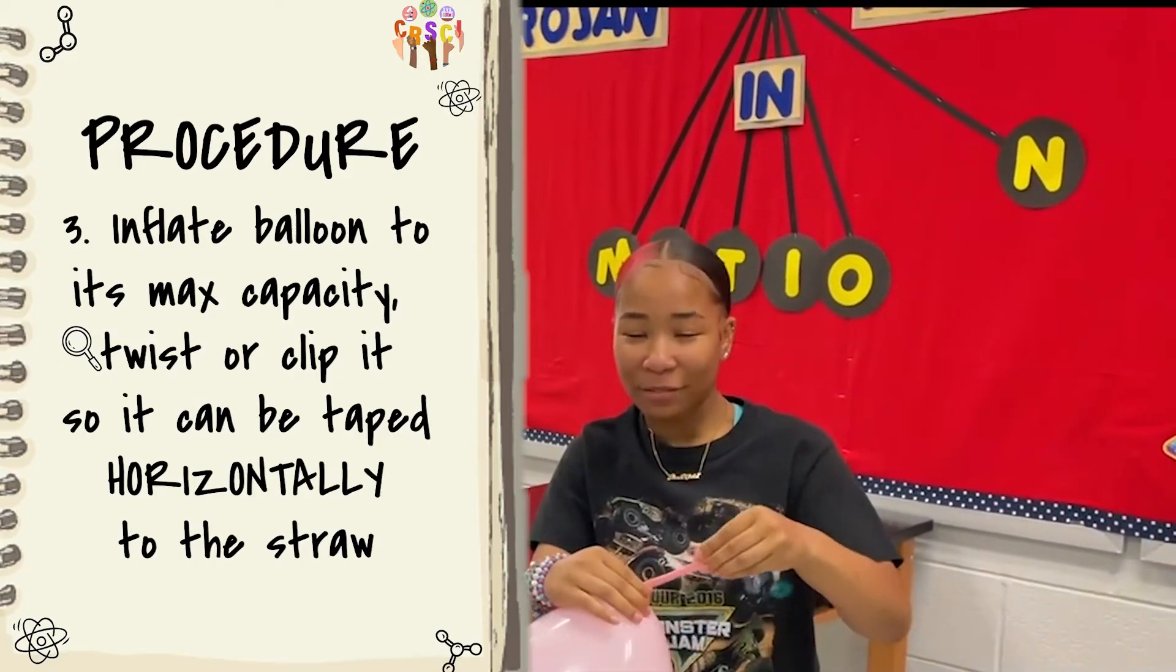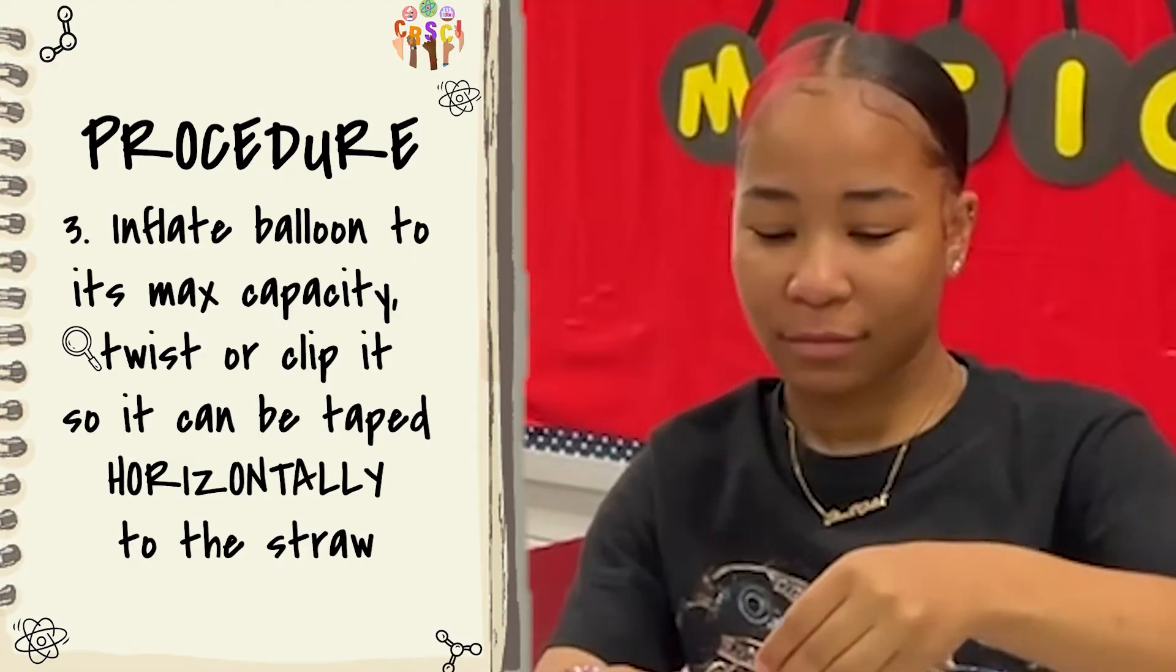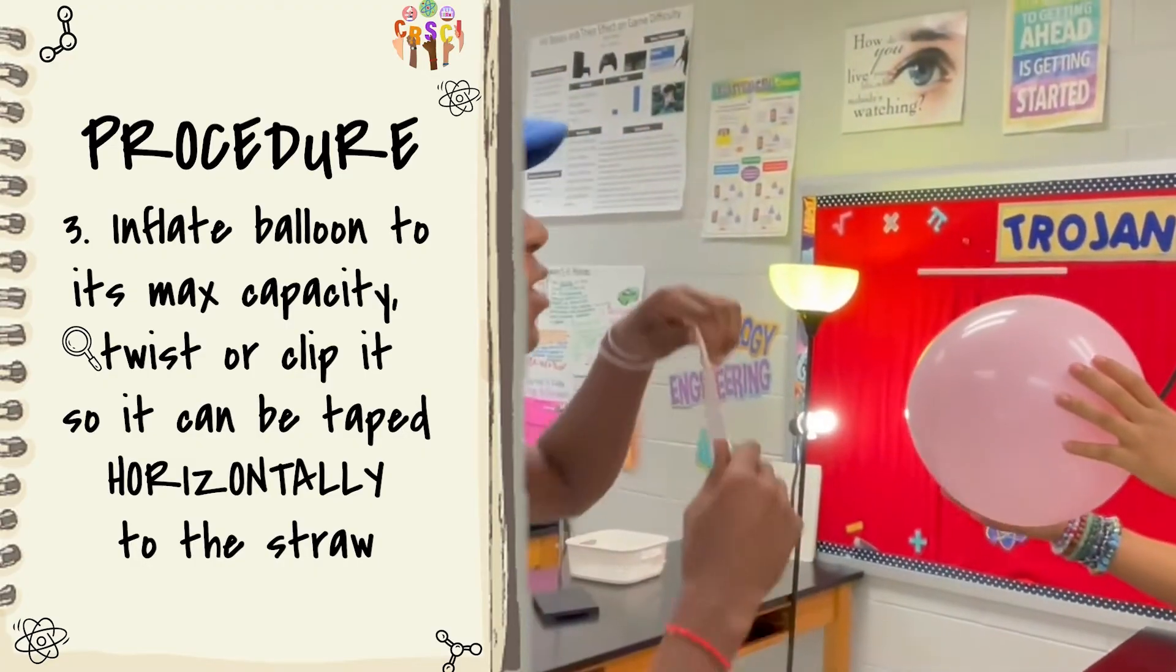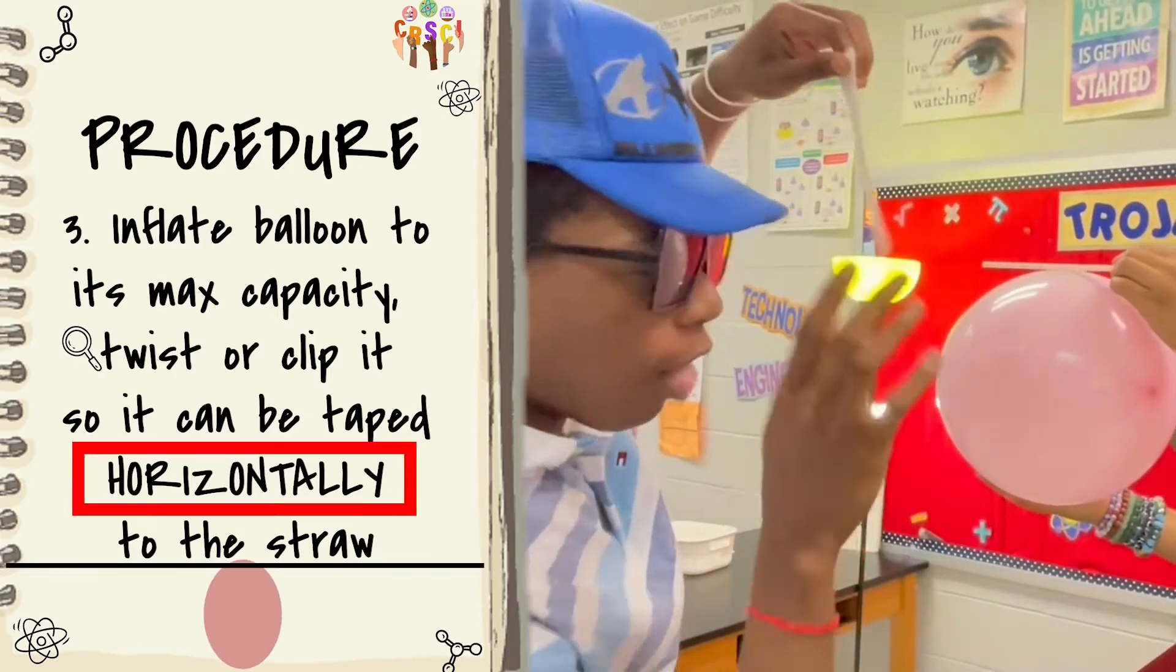Okay, so now you have to blow up the balloon and clip it. Now we're going to tape the balloon to the straw. Make sure it's horizontal.